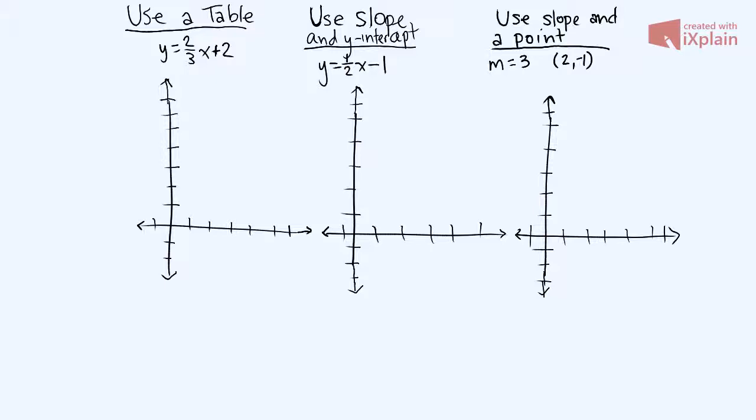So if we have our equation y equals two-thirds x plus two, what we can do is we can create an xy table and we plug in x values, and we can just pick three x values that we choose. Let's do negative 1, 0, and 1. It doesn't really matter. I just chose those because they're easy to work with.